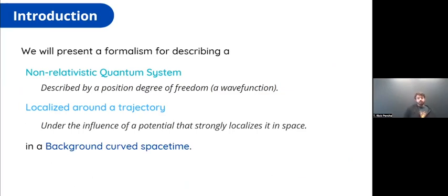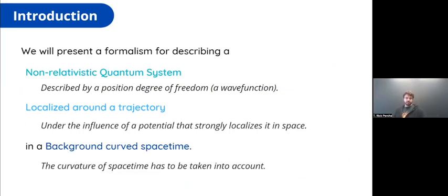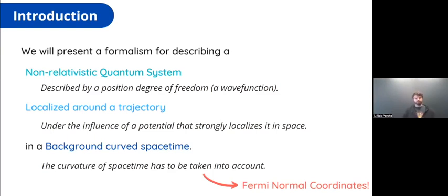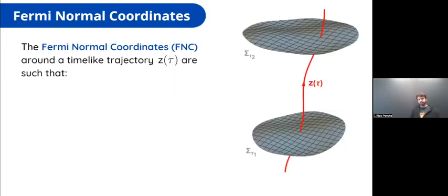There's a potential that traps and localizes this particle in space around the given trajectory it's following. We want to do this in a background curved spacetime, which means we need to take into account the curvature. The way we're going to do this is by using the Fermi normal coordinates, so let's briefly review them.